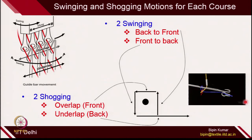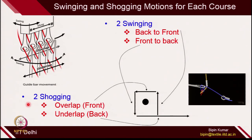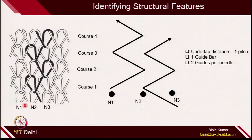In each course, 2 swinging motions and 2 shogging motions are required for course development in warp knitted structures. Once this is clear, you can identify features of any warp knitted structure: how the guide bar switches from one column to another, the nature of shift, how many guides interact with individual needles, and how many guide bars are present — all extractable from the microscopic view of the fabric.